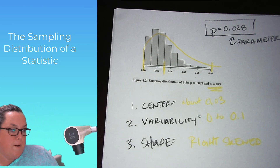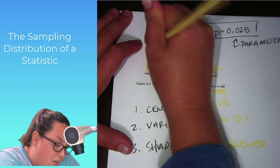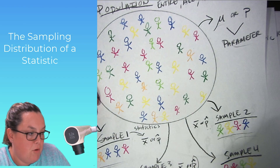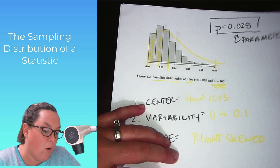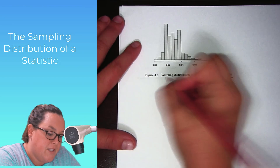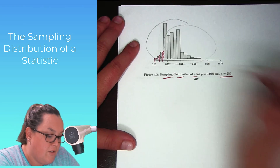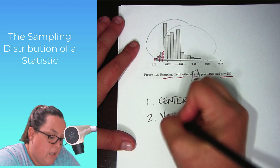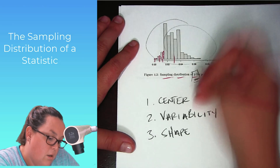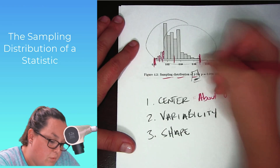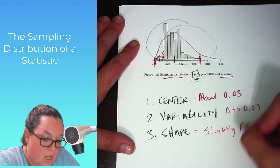This is the sampling distribution of p-hat, which means what you're seeing here is stacks of p-hat values from all those different random samples. These are not people — this distribution refers to values of p-hat. Now we move up to samples of size 250. Still the sampling distribution of p-hat, not people. Starting with the center, it appears to be at about 0.03. The variability ranges from 0 to about 0.07. The shape appears to be slightly right skewed — not as right skewed as the last one.